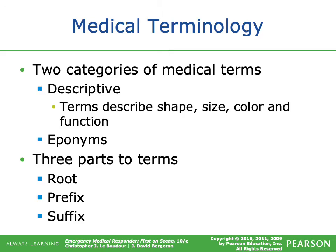Let's get started with medical terminology. There are two categories of medical terms. Descriptive terms describe the shape, size, color, or function of whatever part of the body they're speaking of. Terms have three parts: the root, the prefix, and the suffix.